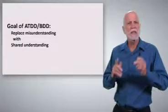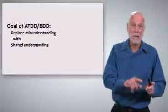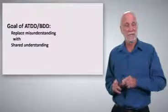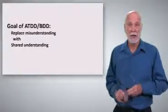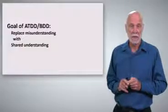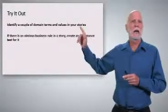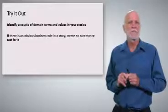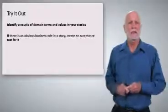So what is the goal of ATDD-BDD? It's to replace misunderstanding with shared understanding. An ambiguous business rule can be misunderstood. The acceptance test is our shared understanding. So now try it out. Look at your stories. Identify a couple of domain terms and maybe some values in your stories. And if you've got an obvious business rule in a story, create an acceptance test for that.